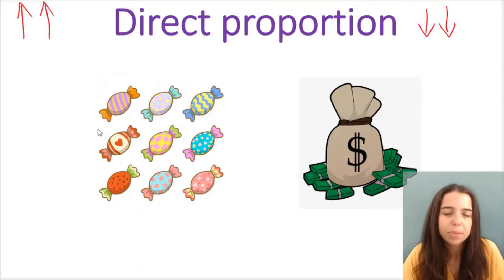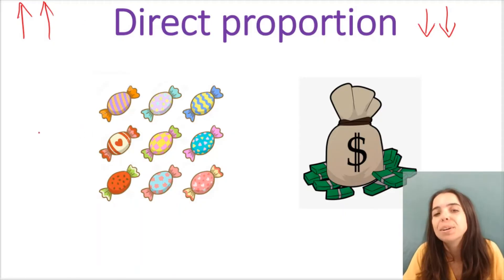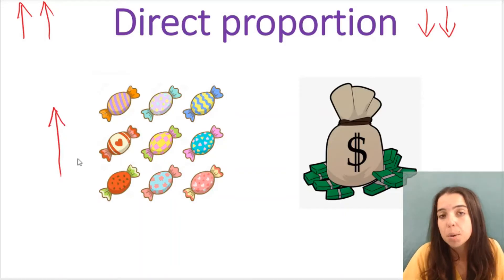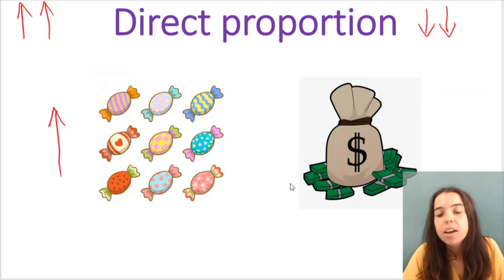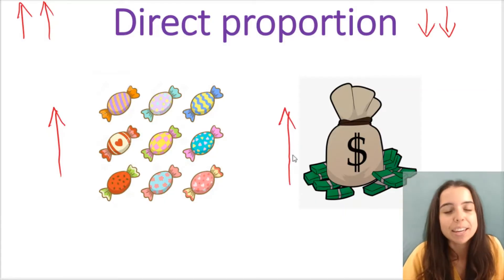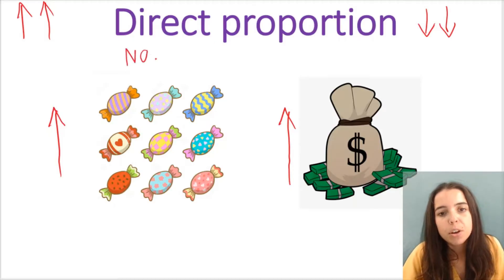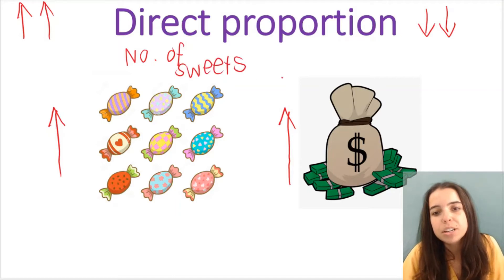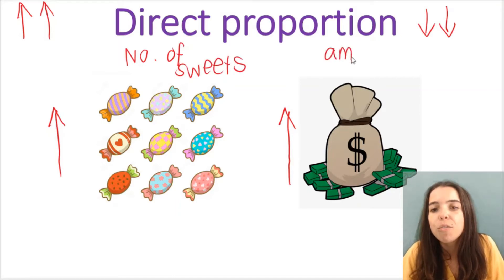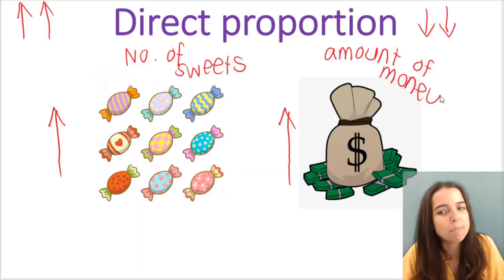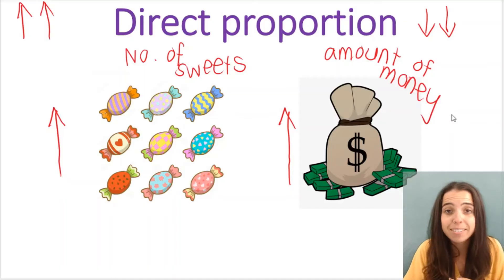Here's an example. I sell sweets at break. The more sweets I sell — so as the number of sweets increases — the amount of money that I make increases. So as the number of sweets increases, the amount of money in rands or dollars that I make increases. That's direct.